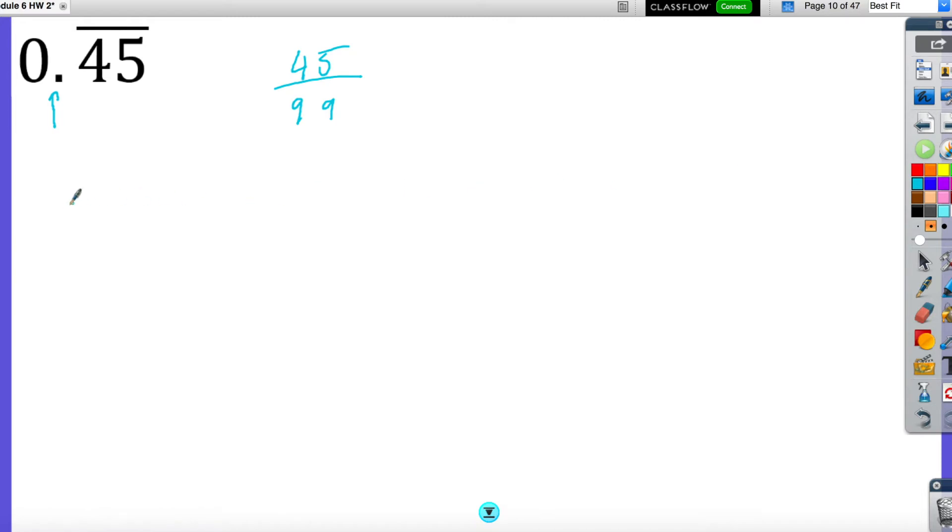So just to clarify what I meant, let's say I had 0.5 with just the 5 repeating. We can easily do that. That is just one number that repeats. It would be 5 over 9. Or if we had something like 0.124 repeating over and over, that is three numbers that repeat. So that would just be 124 over 999.